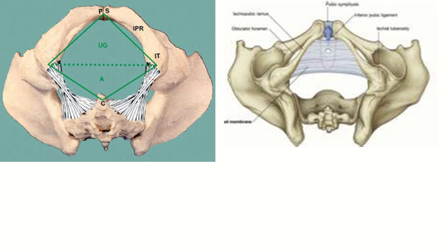This is the pelvic outlet. It is a diamond-shaped space and in the living body this is the space between the two thighs, also known as the perineum. If we draw a horizontal line along the ischial tuberosity, this diamond-shaped space is converted into two triangular areas — in front the urogenital triangle, and behind the anal triangle. The urogenital triangle is covered by a tough membrane — this is the perineal membrane.